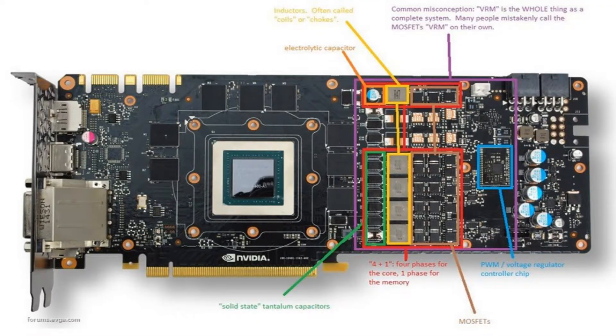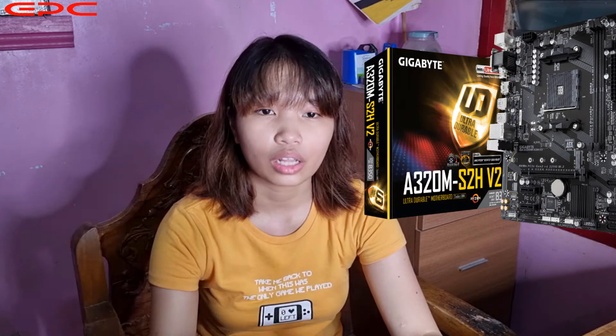GPUs have their own set of VRMs. You can overclock the CPU with B450, while on A320 you cannot. Take note that some A320 have B350 chipsets wherein you can overclock processors, though it is not advisable.